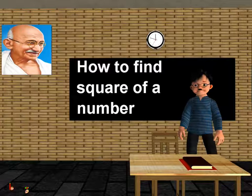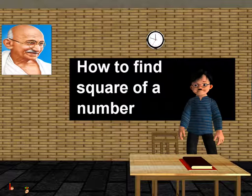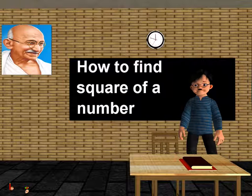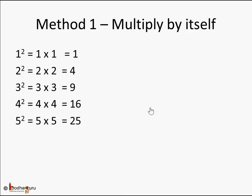Hello children, in this video we are going to learn how to find the square of a number using various methods. The first method is the definition of the square itself — you multiply the number by itself. So if you need to find 3 squared, you do 3 times 3, which is 9. 5 squared is 5 times 5, which is 25. For smaller numbers this makes sense.